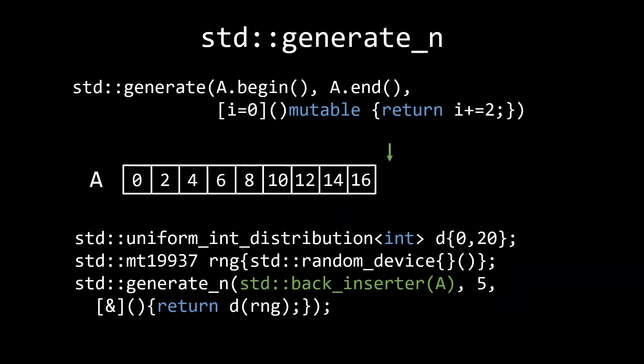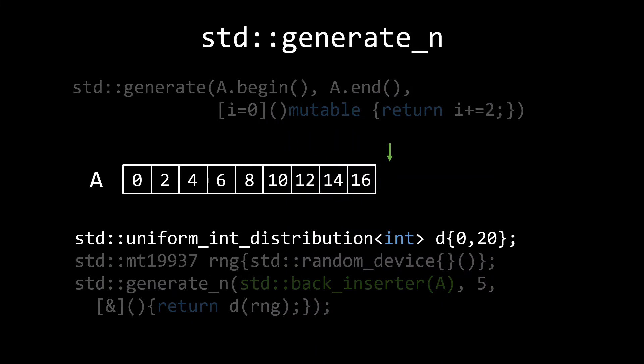We'll talk more about random number generation and algorithms working with random number generators in another episode. The quick summary is, we want to draw numbers between 0 and 20 using a uniform distribution. We'll use the mersenne twister as a random number generator. The mt19937 is an alias for a specific configuration of std mersenne_twister. And then, to actually draw the random numbers from our distribution, we need to pass this random number generator. So that's what's happening here in this lambda.